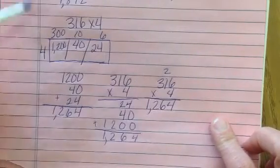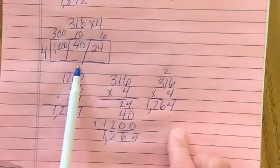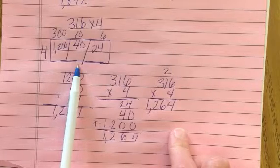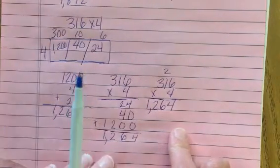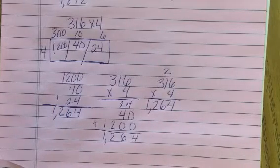There you have it. We can now use the area model to multiply 1 digit by 3 digit numbers.